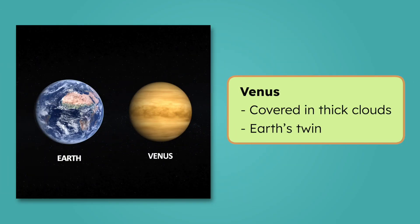From far away, Venus looks a lot like Earth. It's about the same size and shape, which is why it's sometimes called Earth's twin. Since Venus is so similar in size to Earth, do you think it's also similar in temperature?